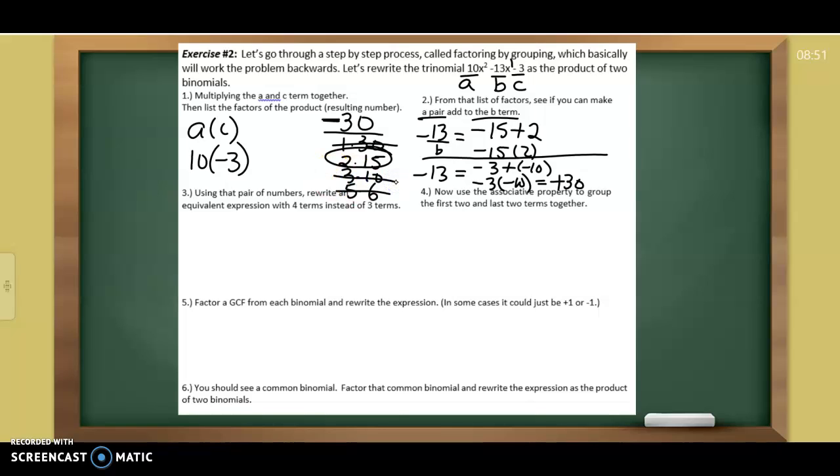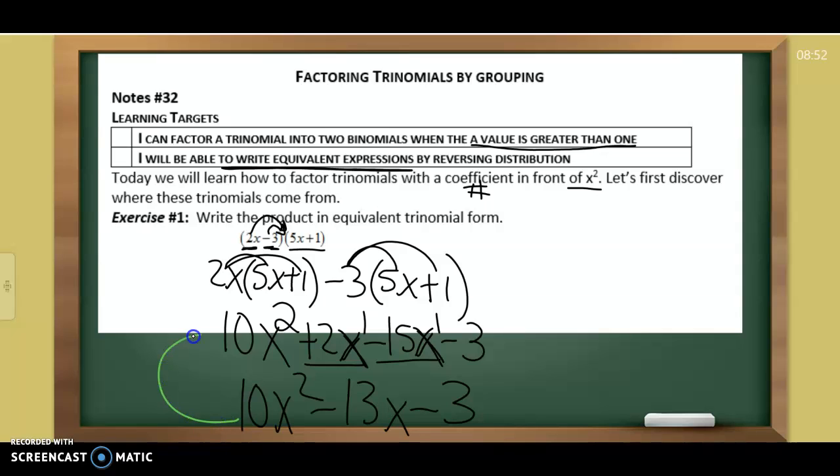Now, what do we do with all that? And it's kind of telling you here, use that pair of numbers to rewrite an equivalent expression with four terms instead of three. So what I mean by that is, still use the 10x squared. That's still the first part. But now I'm going to write negative 15x plus 2x. So this was our middle term, our negative 13. Now it's two pieces. And it's still minus 3. So a couple of things stayed the same. 10x squared stayed the same. Minus 3 stayed the same. But this new piece, this middle piece, well, it was broken apart to make two pieces instead of one.